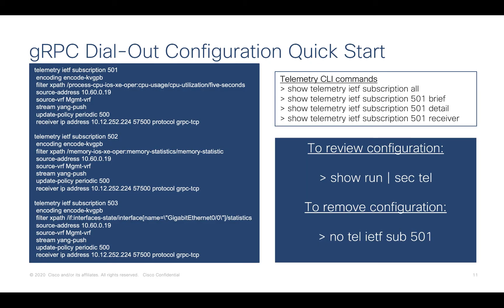As far as QuickStart goes for gRPC, it's not too complicated. Really, we can copy and paste these two or three subscriptions — 501, 502, and 503. And what that's going to do is start pushing telemetry from our device at this IP address, and it's going to push it out to the collector that's listening on port 57500.